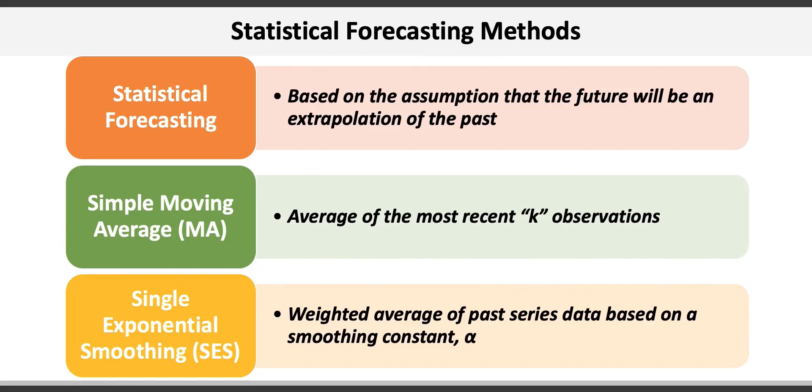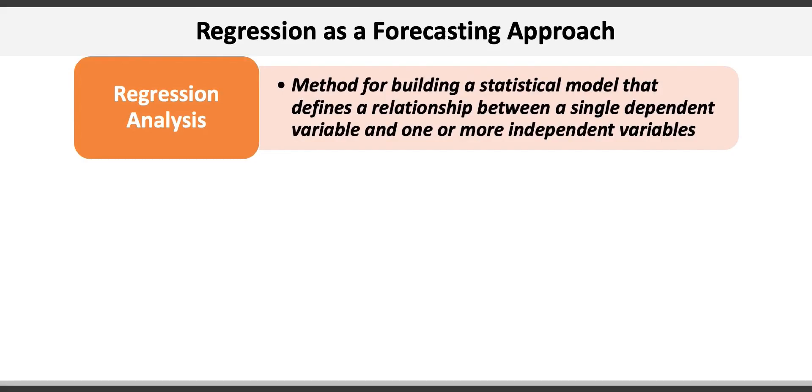An alternative to basic statistical forecasting is regression. Regression analysis is a method for building a statistical model that defines a relationship between a single dependent variable and one or more independent variables. For example, cold temperatures could affect the sales of hot chocolate. In this case, hot chocolate sales would be the dependent variable, which depends on temperature or the independent variable.